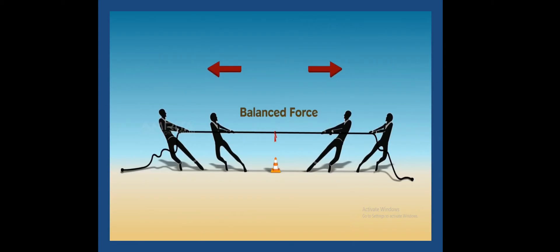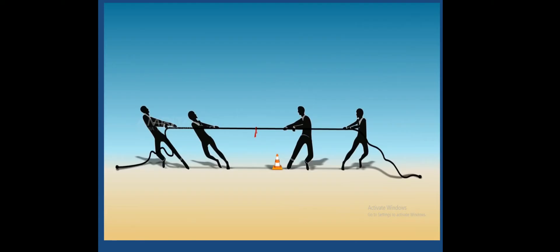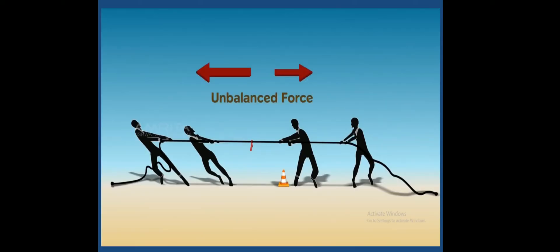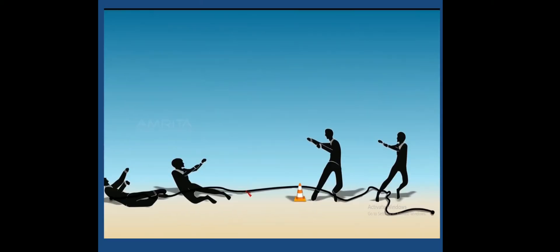If one of the teams applies a greater force, it pulls the other team and the rope towards their side. In this case, the forces are unbalanced, as the two forces are of unequal magnitudes in opposite directions. If one of the teams lets go of the rope, the opposite team falls.